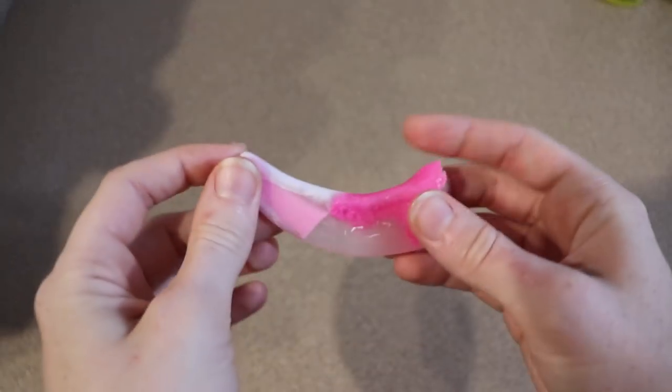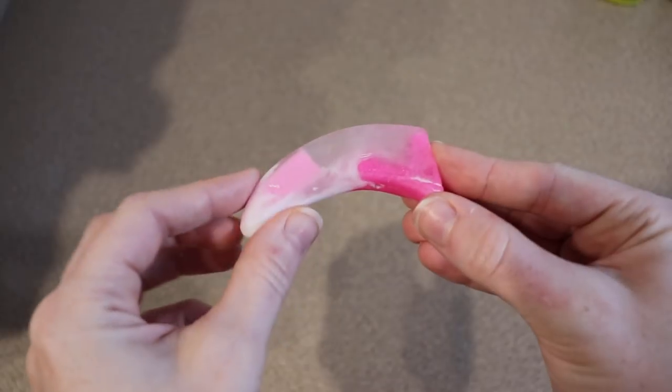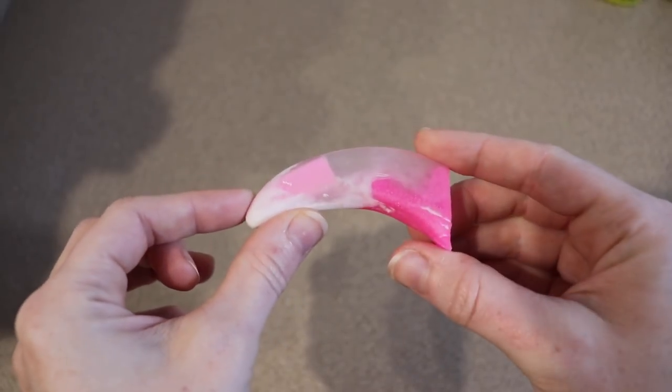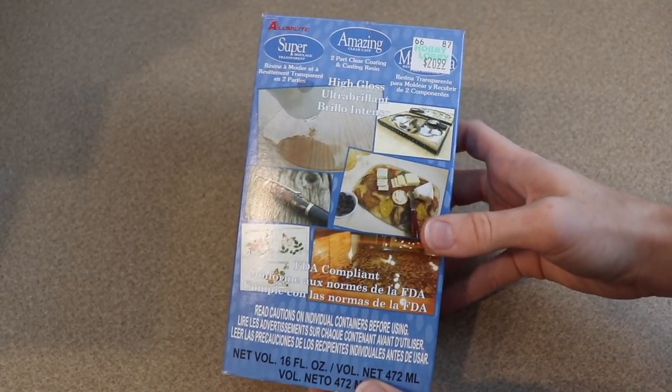You can see that it's made out of scrap resin. It's got paint and all kinds of different colors swirled in it because I was testing different things out, but the claws we're going to make are going to look a lot different than this. The resin I'm working with is a simple crystal clear casting resin.